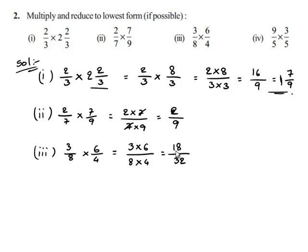Here, we can observe that 18 and 32 are multiples of 2. So, 2 goes in 18 by 9 times and in 32 by 16 times and we will get 9 upon 16.